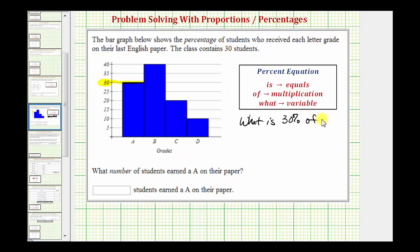So what is 30 percent of 30? If we can answer this question, we know how many students earned an A.